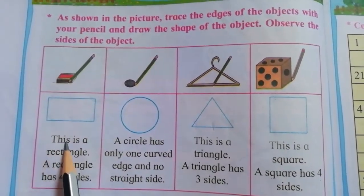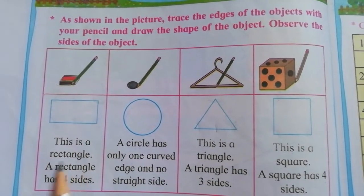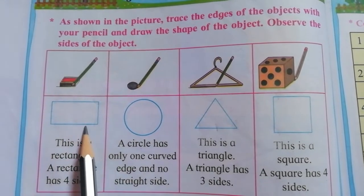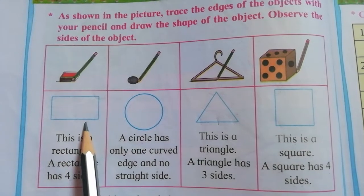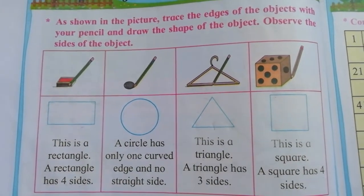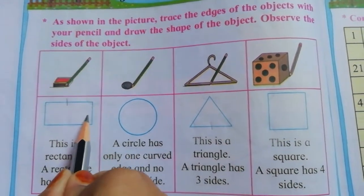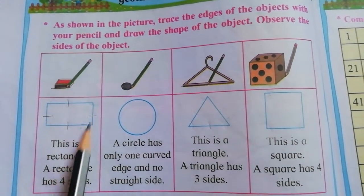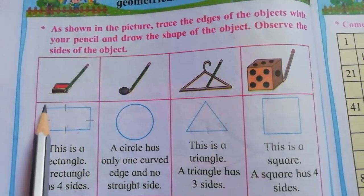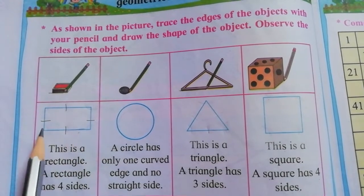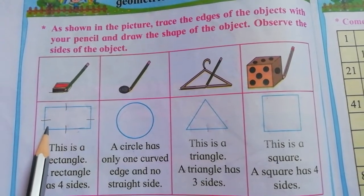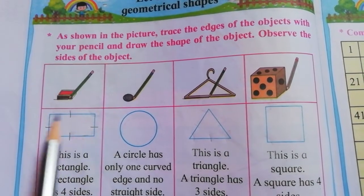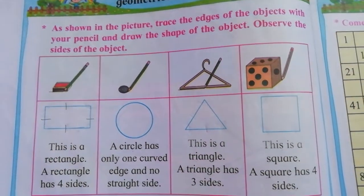First is the rectangle. A rectangle has four sides. This rectangle has four sides: one, two, three, four. These are your four sides. Your sides and edges that we have seen in the previous lesson are similar.